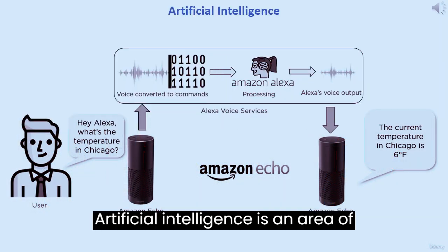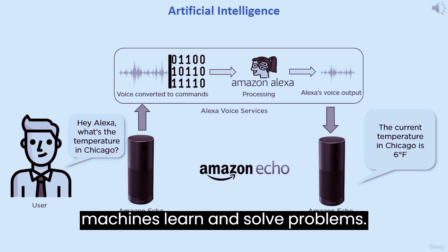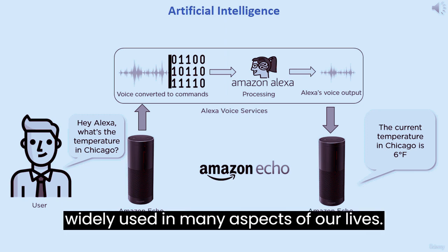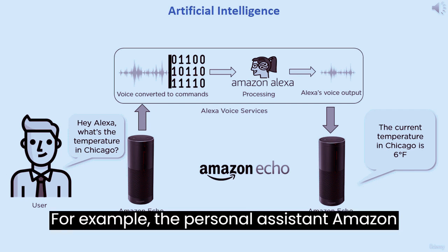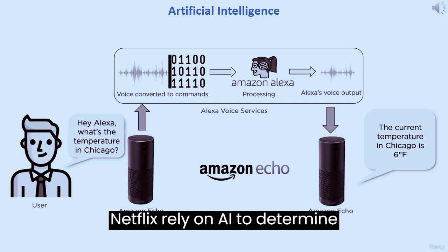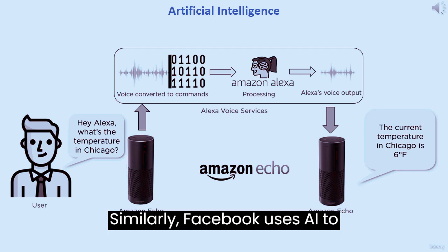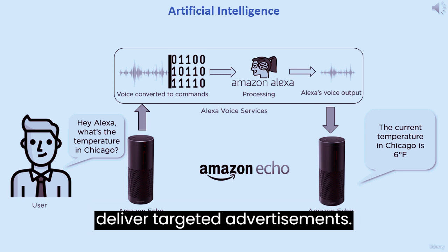Artificial intelligence is an area of computer science that aims to make machines learn and solve problems. AI has already been widely used in many aspects of our lives. For example, the personal assistant Amazon Alexa and online entertainment service Netflix rely on AI to determine what you might like and recommend movies. Similarly, Facebook uses AI to analyze your online activities and deliver targeted advertisements.